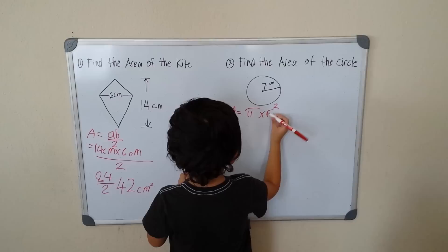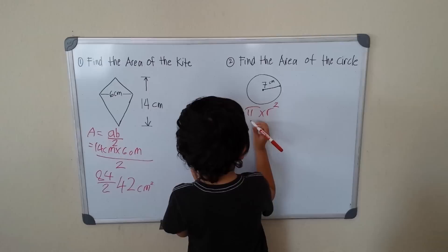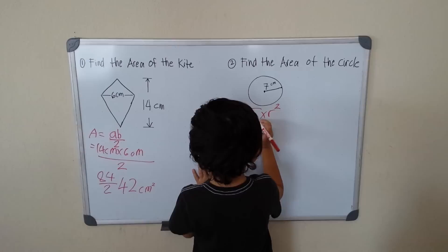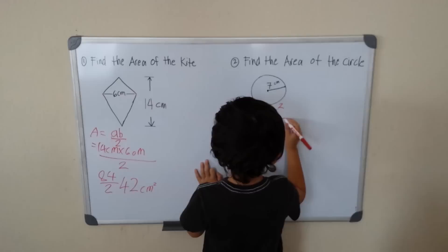Okay? So 3.14, that's our pi. And what's our radius? Okay, we put a bracket. Okay? Okay, radius is 7 centimeters.